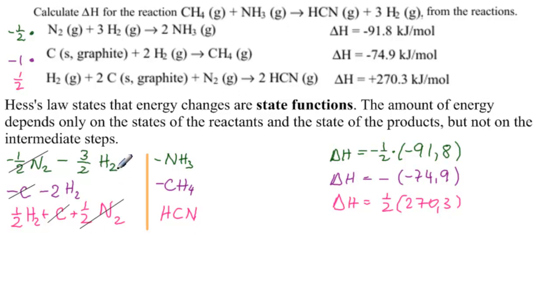So we have minus three halves, that's minus 1.5, minus two, that's minus 3.5, and then plus one, so minus three H2 on this side.